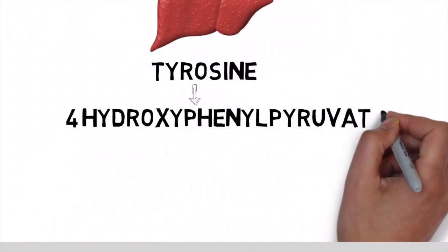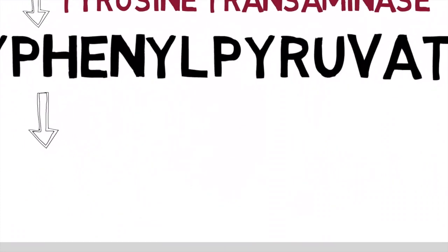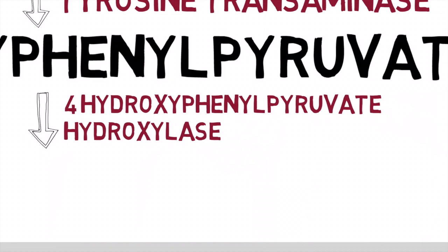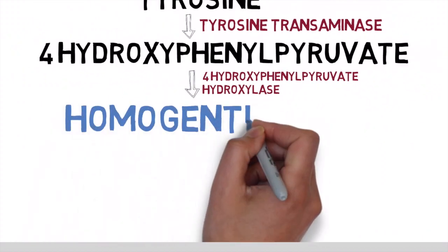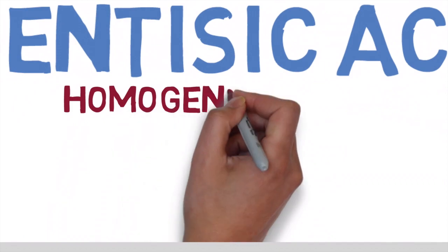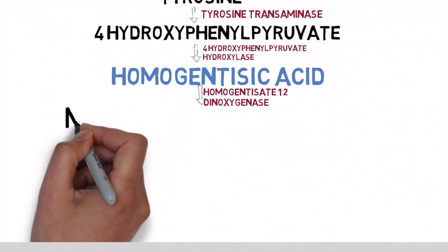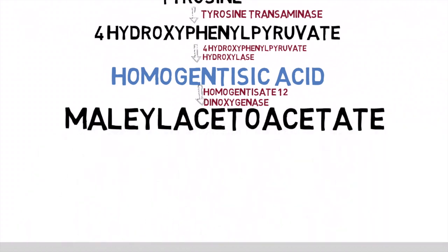Tyrosine is converted into 4-hydroxyphenylpyruvate by an enzyme called tyrosine transaminase. 4-hydroxyphenylpyruvate is then converted by 4-hydroxyphenylpyruvate hydroxylase into homogentisic acid. The next step is key to understanding the pathogenesis of alkaptonuria: homogentisic acid is converted by homogentisic acid 1,2-dioxygenase into maleylacetoacetate. This enzyme is defective in alkaptonuria, leading to accumulation of homogentisic acid.